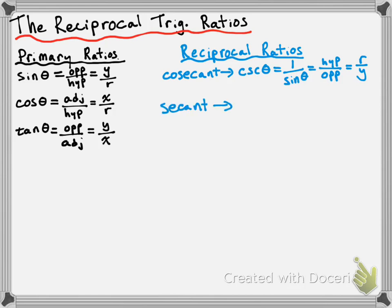The second reciprocal ratio is called secant. It's written as SEC of theta, and it is the reciprocal of the cosine function. So secant of theta is equal to 1 over cosine of theta. It could also be written as hypotenuse over adjacent, or r over x.